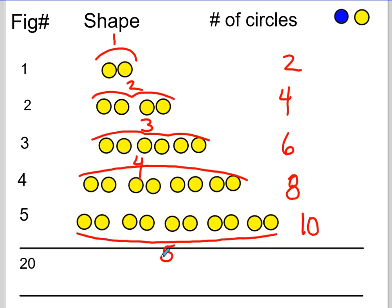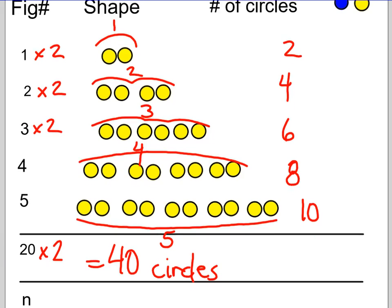So what I can look at is figure number 1 had 2 yellow circles. Figure number 2 had 4. Well, if I start looking here and say, hey, 1 times 2 is 2. 2 times 2 is 4. 3 times 2 is 6. All I have to do is take my figure number, multiply it by 2, and I come up with the number of circles. So if I took my 20 down here and I times it by 2, I should get 40 circles in that particular picture, which I'm not going to draw.